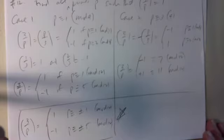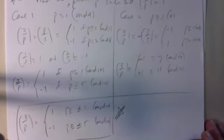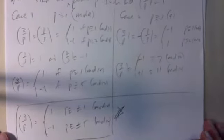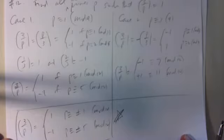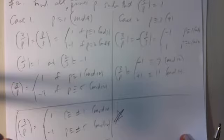A student asks: what about finding all primes p for which negative 3 is a quadratic residue instead of 3? The professor asks for clarification, and the student confirms: same question but with negative 3 instead of 3.